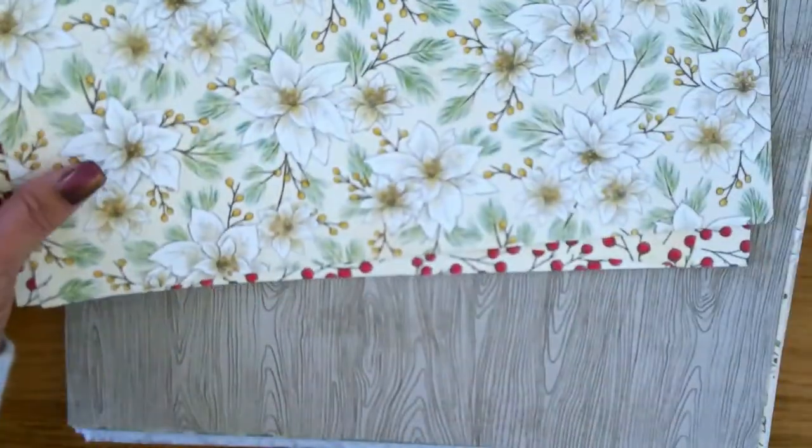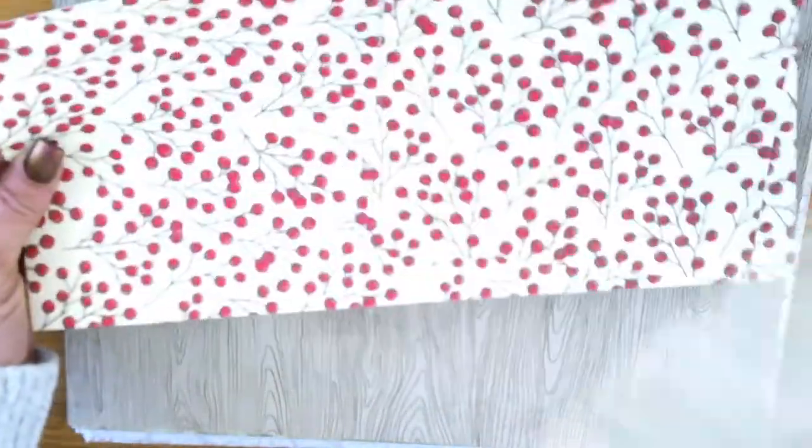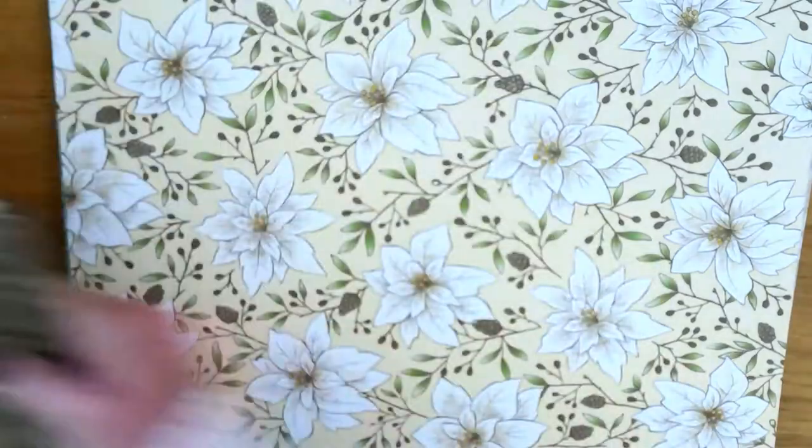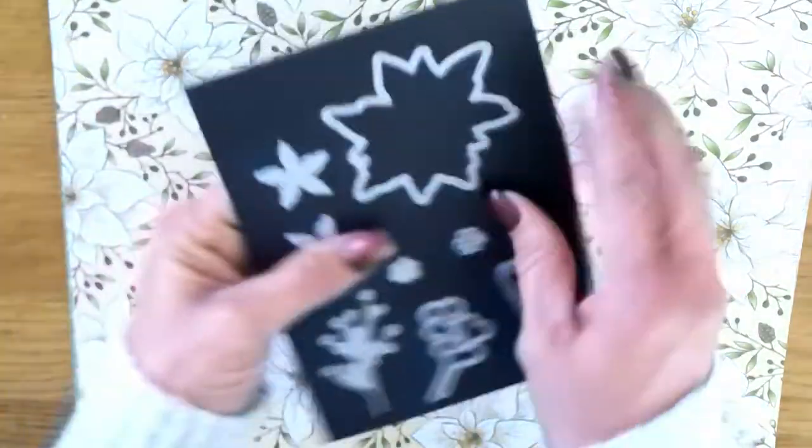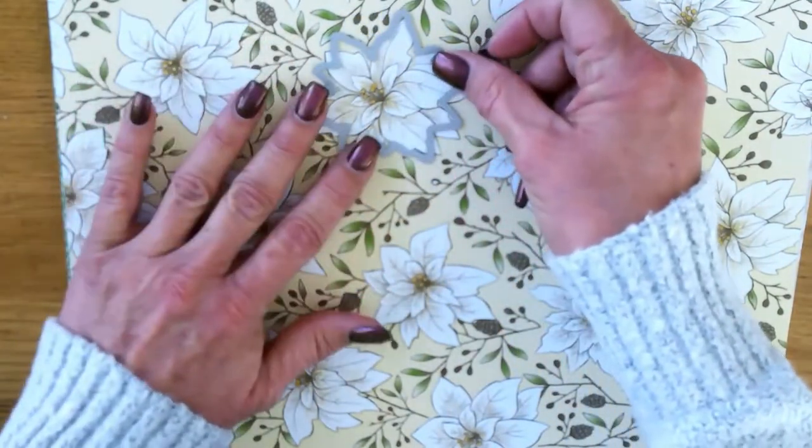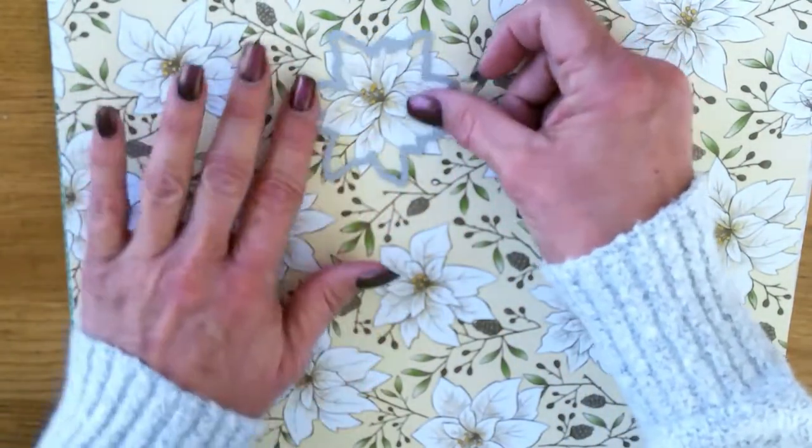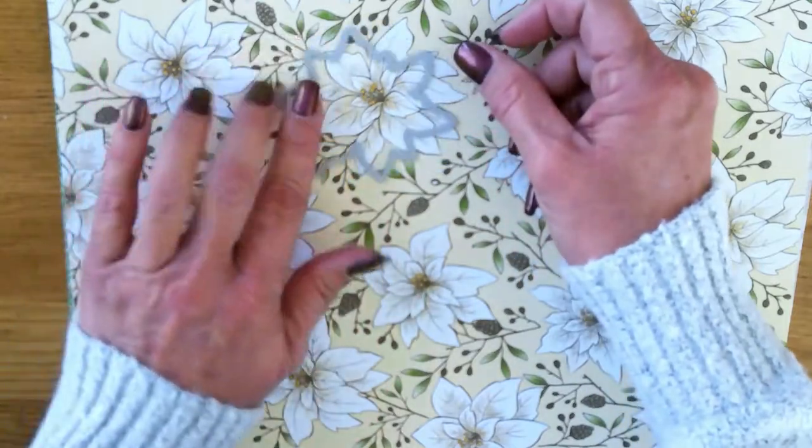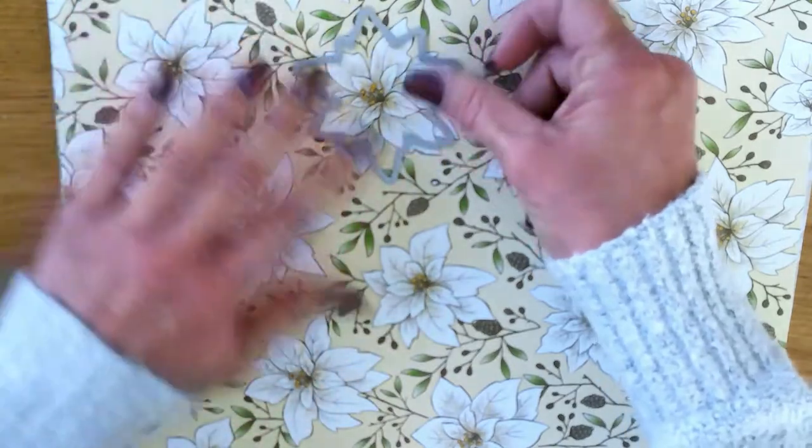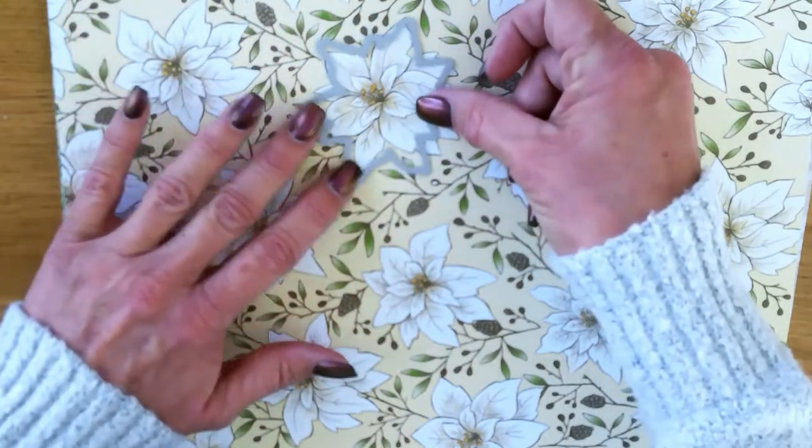Then there's the Poinsettia Place Designer Series Paper. You can tell I've been using mine a lot. There are gorgeous, gorgeous patterns. The colors in this suite are Real Red, Old Olive, Garden Green, Bumblebee, and Soft Suede. A lot of the die cuts will cut out pieces and parts of the coordinating designer series paper.